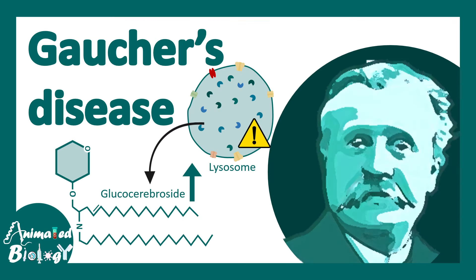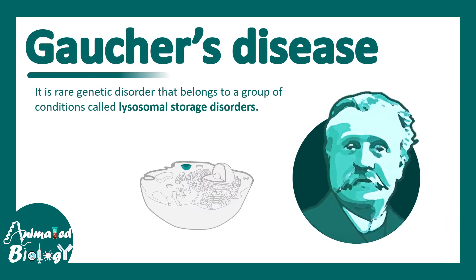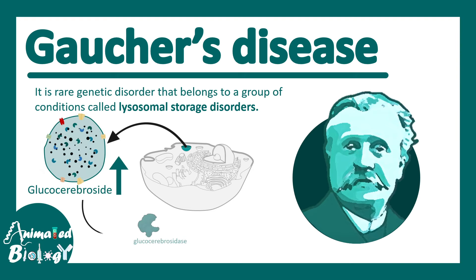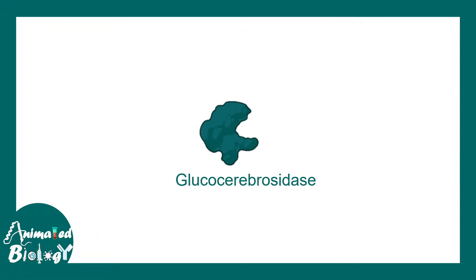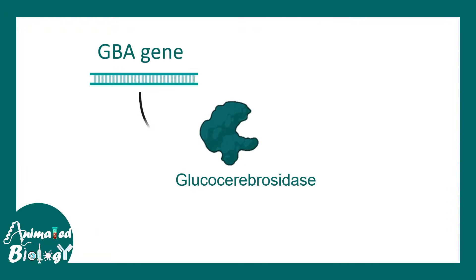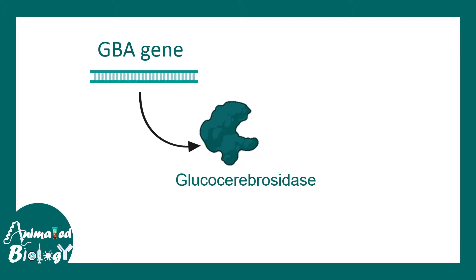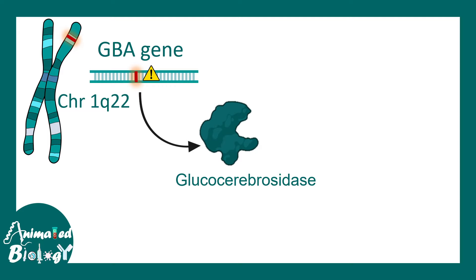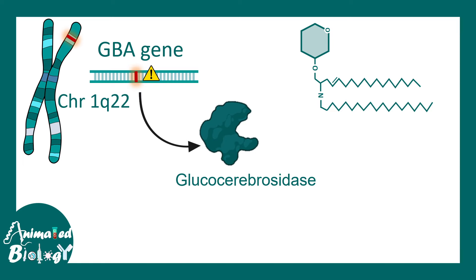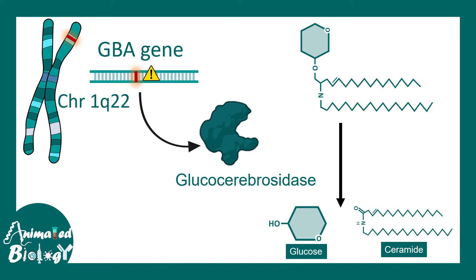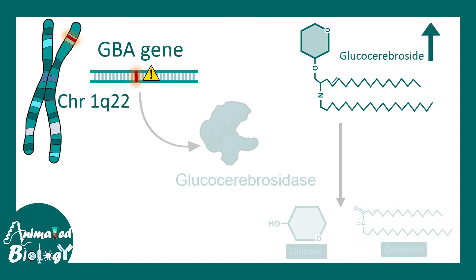Gaucher's disease is a lysosomal storage disorder where glucocerebroside accumulates because the glucocerebrosidase enzyme is non-functional. This enzyme is encoded by the GBA gene. When the GBA gene is mutated, it creates a faulty glucocerebrosidase enzyme. Normally, glucocerebrosidase breaks down glucocerebroside into glucose and ceramide. When this enzyme is non-functional, this breakdown doesn't happen and glucocerebroside accumulates inside the cell, leading to several problems.